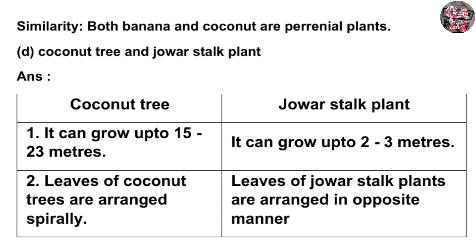D. Coconut tree and Jowar stock plant — make two columns. A coconut tree can grow up to 15 to 23 meters; a Jowar stock plant can grow up to 2 to 3 meters. Leaves of coconut trees are arranged spirally; leaves of Jowar stock plants are arranged in an opposite manner.